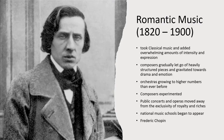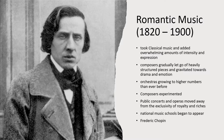The Romantic period took classical music and added overwhelming amounts of intensity and expression. As the period developed, composers gradually let go of heavily structured pieces and gravitated towards drama and emotion. Instrumentation became even more prominent with orchestras growing to higher numbers than ever before. Composers experimented in new ways, trying out unique instrumentation combinations and reaching new horizons in harmony. Public concerts and operas moved away from the exclusivity of royalty and riches and into the hands of the urban middle-class society for all to enjoy. The Romantic period was also the first period where national music schools began to appear. The well-known relaxing piano pieces of Frederic Chopin were composed during this period.